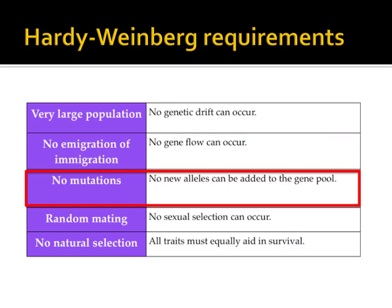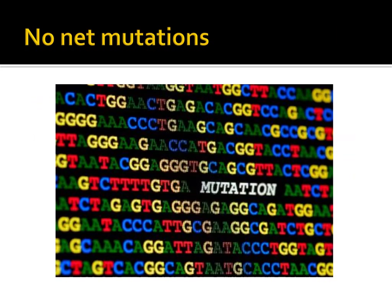The third requirement for a population to be in Hardy-Weinberg equilibrium is that the population must have no mutations. Just like with immigration and emigration, no new genes can be added to the population by any means. Mutations occur randomly and can be caused by a variety of different circumstances. These random mutations can introduce new alleles into the population and eventually change how common certain characteristics are, especially if they convey some significant advantage.